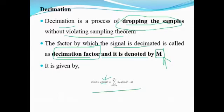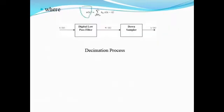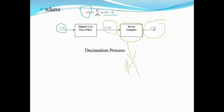The decimation factor is denoted by M, and the mathematical representation of the decimation process is: y of m equals w(m·M), where M is the decimation factor. The full expression is w of n equal to summation from k equals minus infinity to plus infinity of b_k times x of (mM minus k). The input signal x of m is passed through a down sampler to perform decimation with factor M, resulting in the decimated sequence y of m.